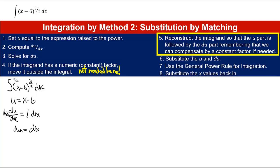Step 5 says to reconstruct the integrand so that the u part is followed by the du part, remembering that we can compensate by a constant factor if needed. Now that's a lot of words, but all it's asking us to do is to look at what I'll call the u part, that's the x minus 6, and the du part is the part that's associated with dx. We want to make sure that the u part comes first, and is followed by the du part.